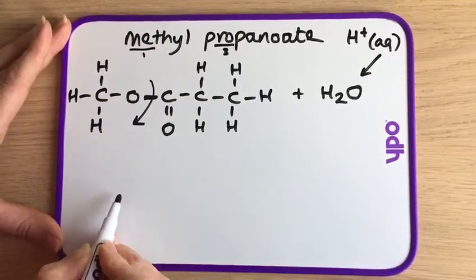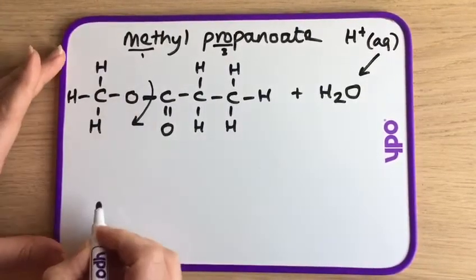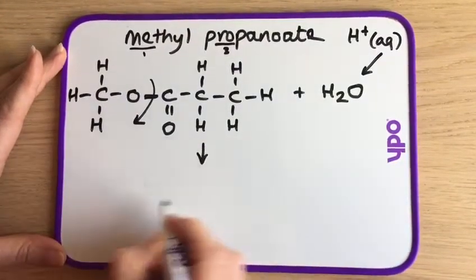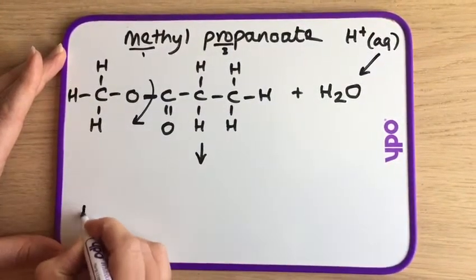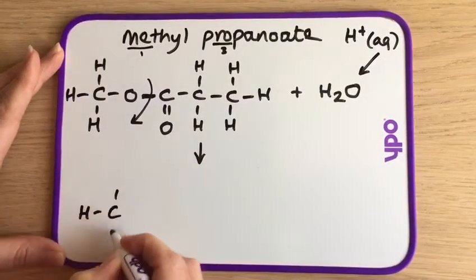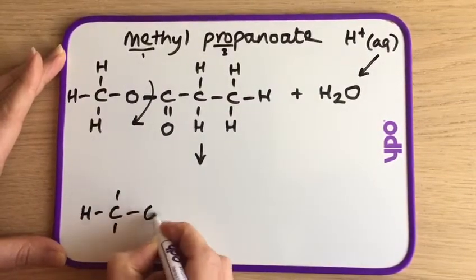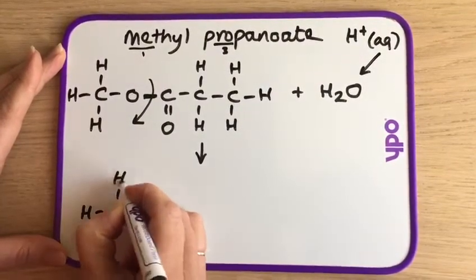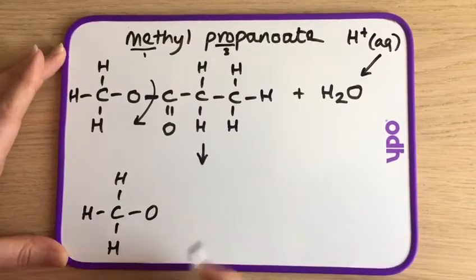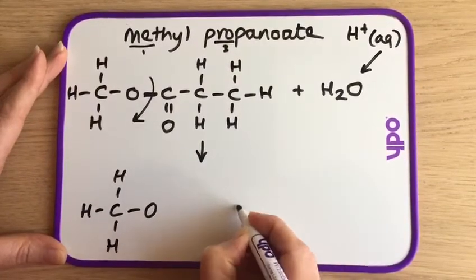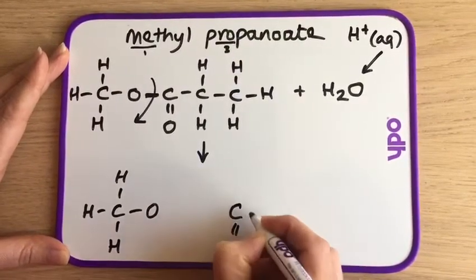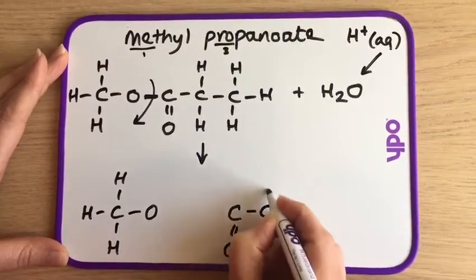I'll just draw a line through to show the bond breaking, and then let's redraw for our products — that's that bit there, and then we start afresh over here with our second bit.